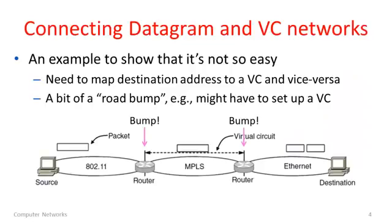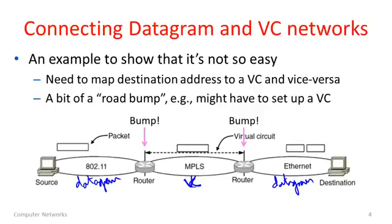Just to give you an example and get into the flavor of how we might connect these things, I'll talk about connecting datagram and virtual circuit networks. Suppose you have a source sending to a destination — the source is on a datagram network, the destination is also on a datagram network, and in the middle there's a virtual circuit network. When you want to send from this source to this destination, you need to be able to write the destination address in this packet, even though the formats might be different because one's on 802.11 and the other's on ethernet. The packet will be forwarded in the datagram network using the destination address, router at a time, until it reaches the virtual circuit network — at which point something needs to happen: this individual datagram needs to be mapped to the right circuit.